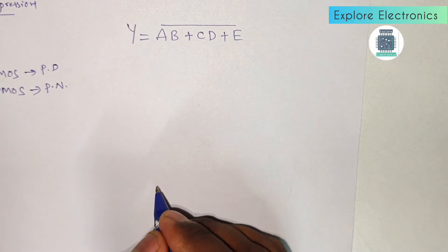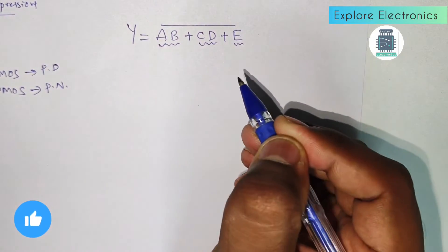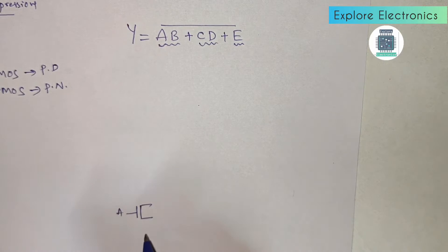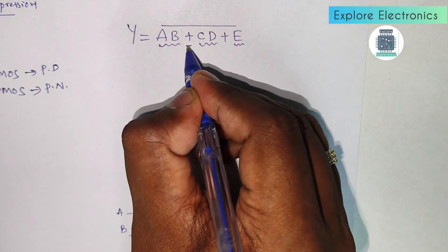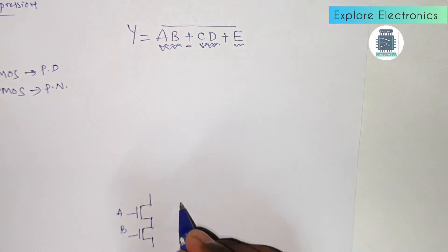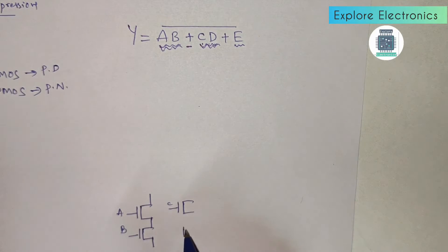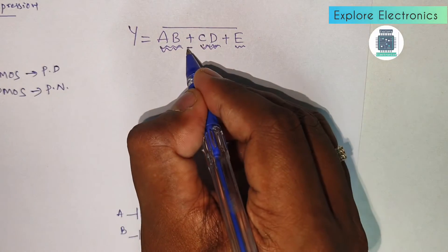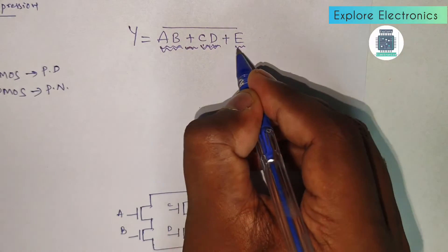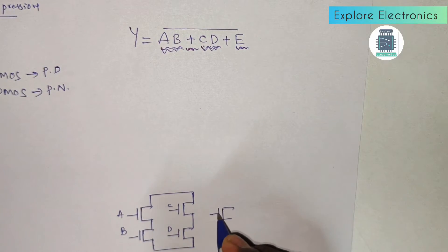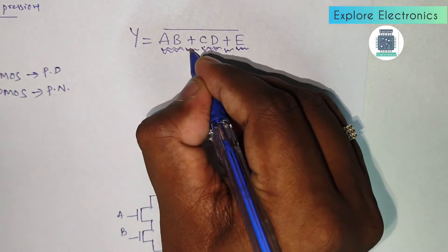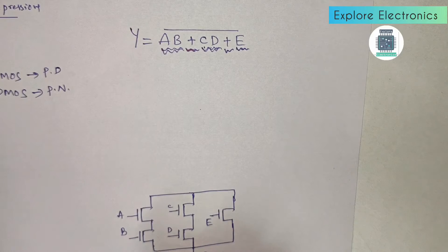In the pull-down: a·b in series, c·d in series, and e is a single transistor. So write an N transistor with gate input a and one more with gate input b in series. Then c·d: transistor with gate input c and transistor with gate input d in series. These two pairs are in parallel with each other, and then transistor e is also in parallel with them. Connect this to ground — this is the pull-down network.